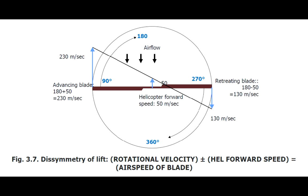But once you get up into the air and start moving forward, it changes things a little bit. Because now your advancing side, which is moving faster than the body of the helicopter, is getting that 180 meters per second plus the airspeed of the helicopter. And the blades on the retreating side, because they're moving in the opposite direction compared to the direction of travel, they're getting the 180 meters per second of rotation minus the helicopter's forward airspeed. So the blades on the left are going to generate lift as if they were moving 230 meters per second, while the blades on the right are going to generate lift as if they were moving 130 meters per second.